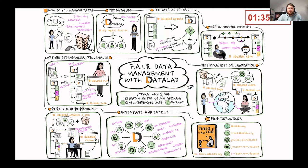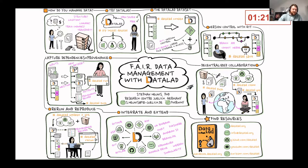At its core we have the DataLad dataset, which consists of a git repository for version controlling your file tree and a data annex managed by git-annex for handling arbitrarily large file content. With this combination, DataLad lets you unlock the collaborative and distributed benefits of git for your data.